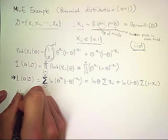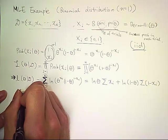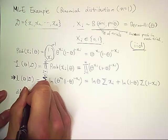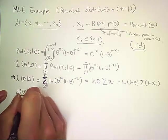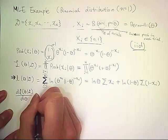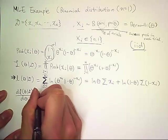So we take the derivative of the log-likelihood of theta given d with respect to theta. Set it to zero.